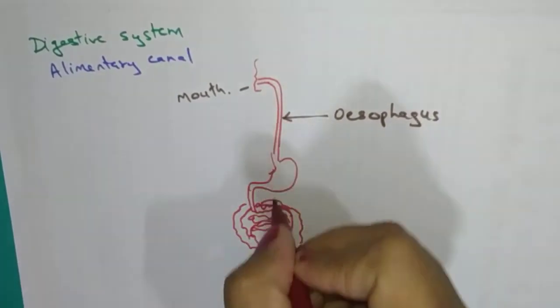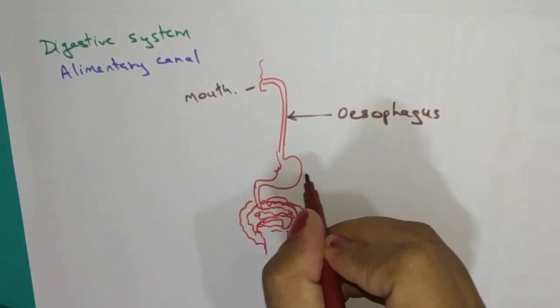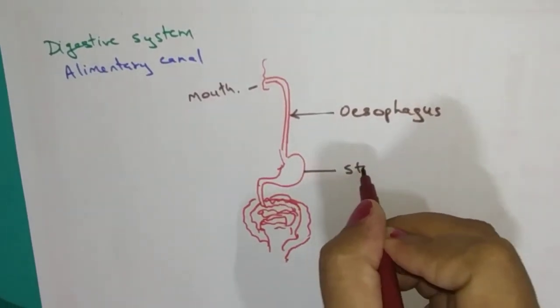That is just for the passage of the food. The J-shaped structure, this sac or this bag-like structure, it is called as stomach.